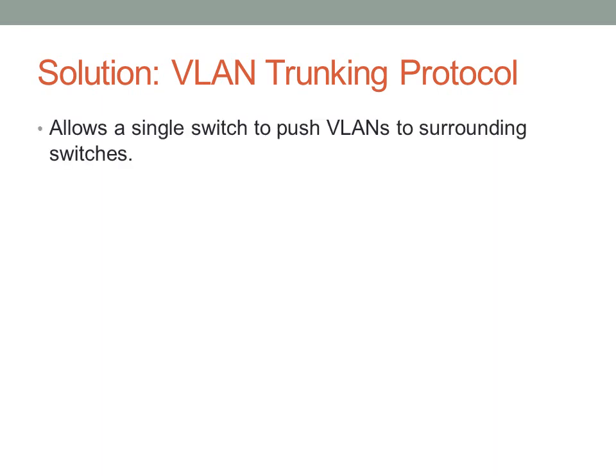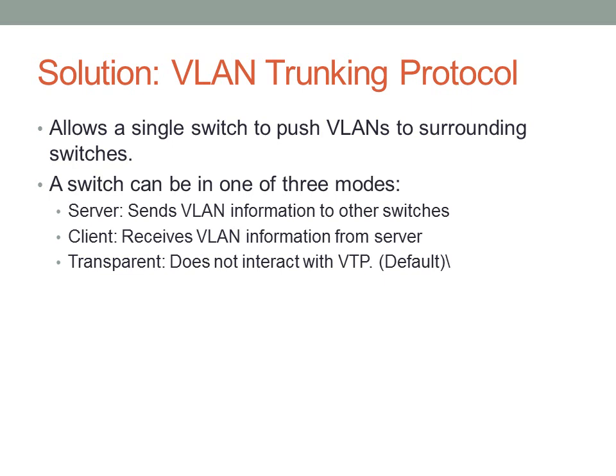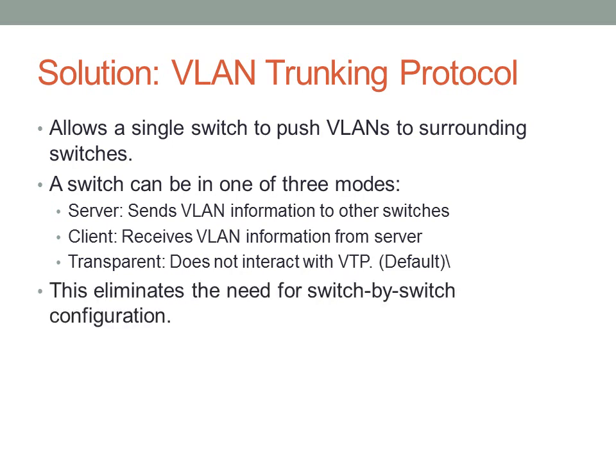VLAN trunking protocol is designed to allow a single switch to push VLAN information to surrounding switches. This VLAN information is contained in a VLAN database file, typically named VLAN.dat on Cisco switches. A switch can be in one of three VTP modes. In server mode, the device can send and receive VLAN information. In client mode, the device can receive VLAN information but cannot send it — you will receive new VLANs but cannot make VLAN modifications on that switch. In transparent mode, the device just passes VTP information through without using it. This eliminates the need for switch-by-switch configuration, because VLAN information can be pushed from a server to clients or other servers.